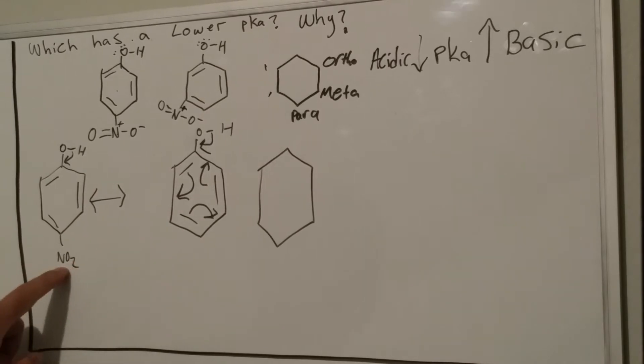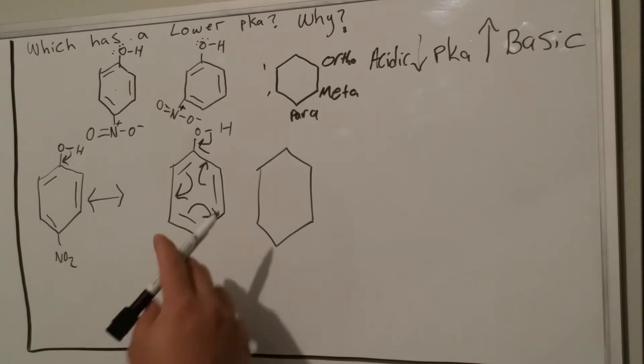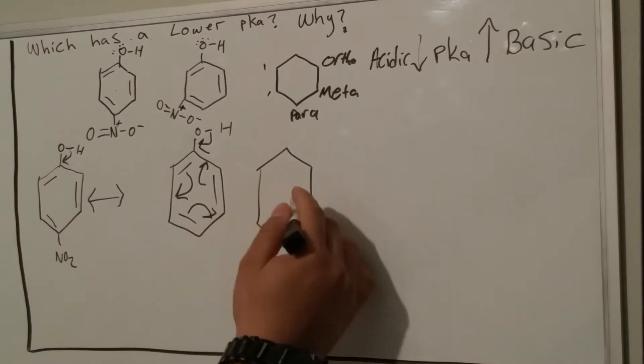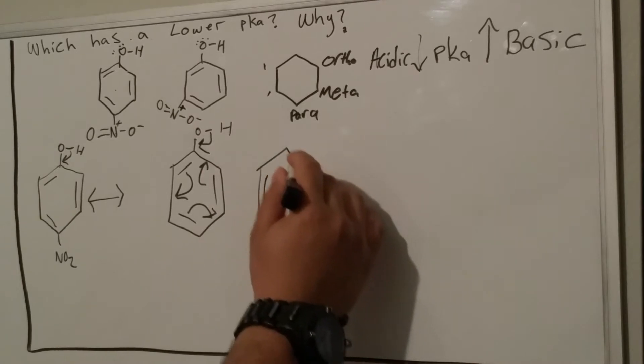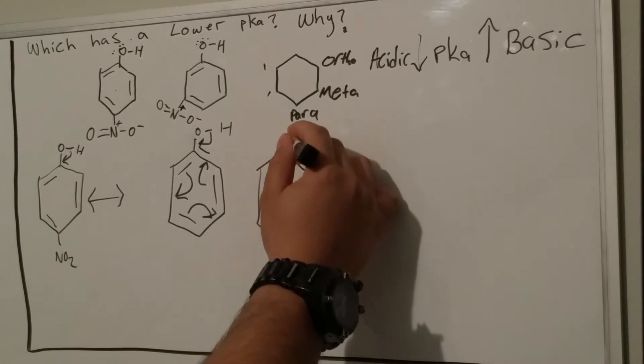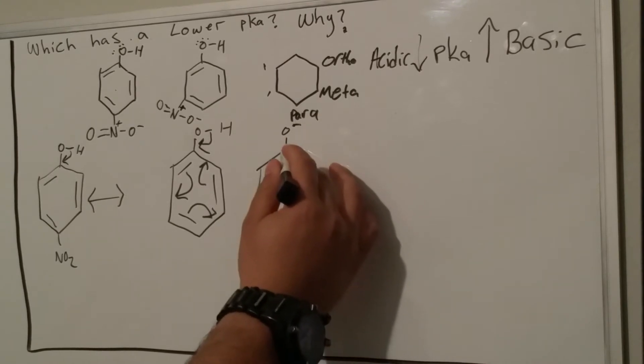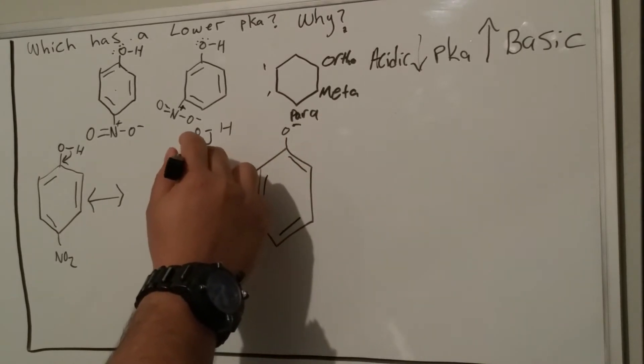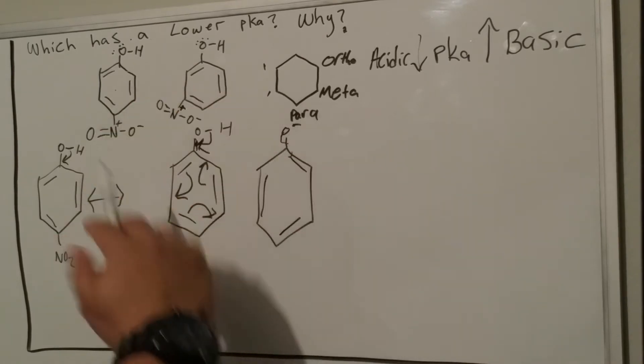Most people when drawing resonance structures would just draw an arrow to here, then draw an arrow to here, to show that it's aromatic, but you don't get to appreciate a very important part here that involves the NO2. You're actually skipping that part, and if you do this on an exam you're not going to be able to tell which one builds the better resonance structure.